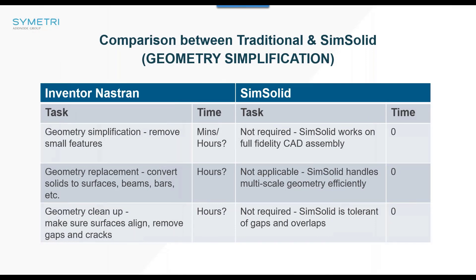One task we spend a lot of time on is geometry simplification — removing features like holes or radii, replacing geometry with simpler representations like surfaces or beams, or filling and removing gaps. Depending on the complexity of the geometry, this can take minutes to hours, and for large-scale models it could take days. SimSolid doesn't require any simplification — it works directly on your CAD geometry and doesn't care about gaps and overlaps.